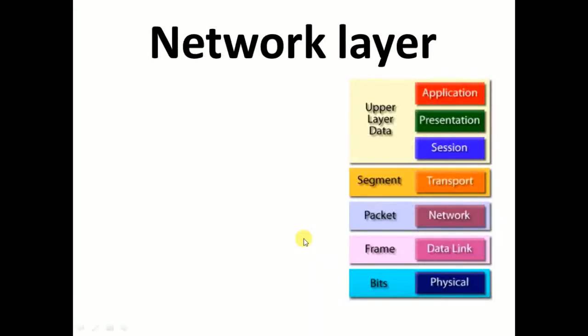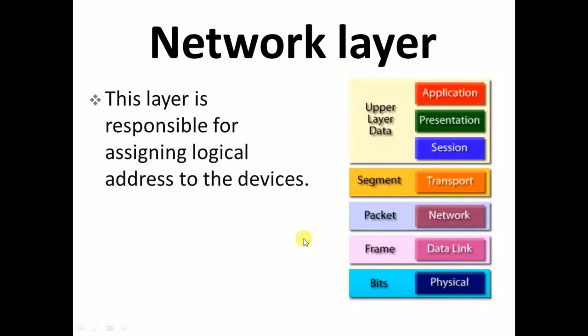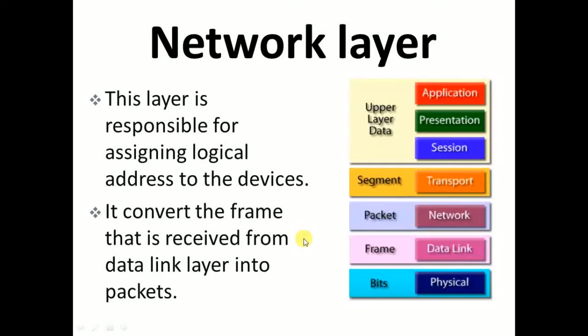After the data link layer, the next one is the network layer. This layer is responsible for assigning logical addresses to devices. Logical address means IP address. This layer also translates logical network addresses to their physical addresses, like device name to MAC address. It also converts the frames received from the data link layer into packets. A device like a router resides on the network layer.